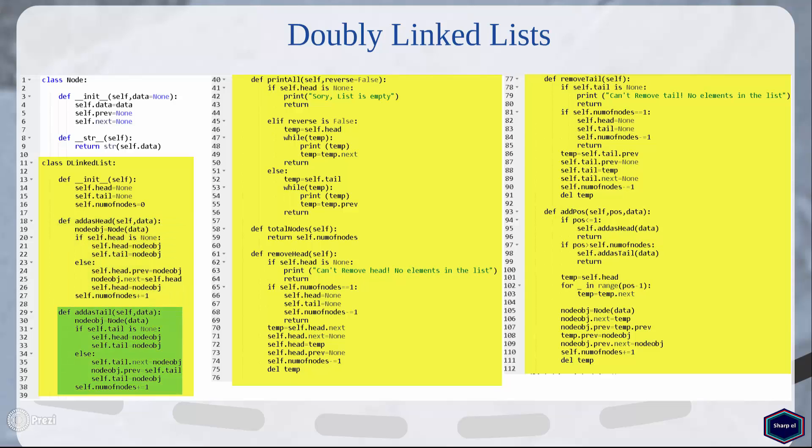The add_as_tail method is very similar to the add_as_head method. In this method I first check if the list is empty. If yes, then the new node is also the first node in the list. If the list is not empty, I point the next attribute of the last node to the new node object and the previous attribute of the new node object to the last node in the list, and then I set the new node object as tail. In the last line I increase the number of nodes by one.